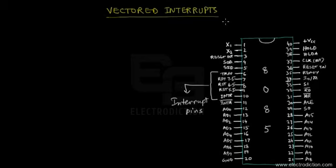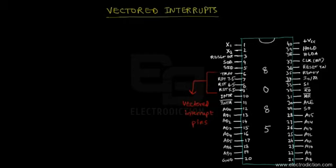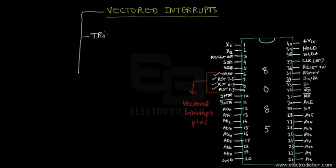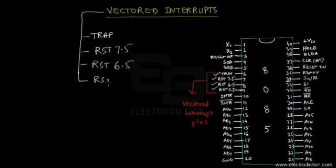When we talk about vectored interrupts, we would not include INTR in this group. Apart from INTR, the rest of the interrupt pins are known as the vectored interrupt pins of the 8085. This includes Trap (pin 6), RST 7.5, RST 6.5, and RST 5.5 — all of these are vectored interrupts.